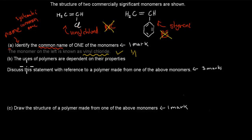Now the second part is, the uses of polymers are dependent on their properties. Discuss the statement with reference to a polymer made from one of the above monomers. And again it says, one of the above. So in this case we have to say, is that statement true or false? And if it's true, we have to discuss it in terms of the reference as well. So we give reference to one of the above. So what I basically said is, yeah, first I looked at the statement and said, yep, it's true. It is true.